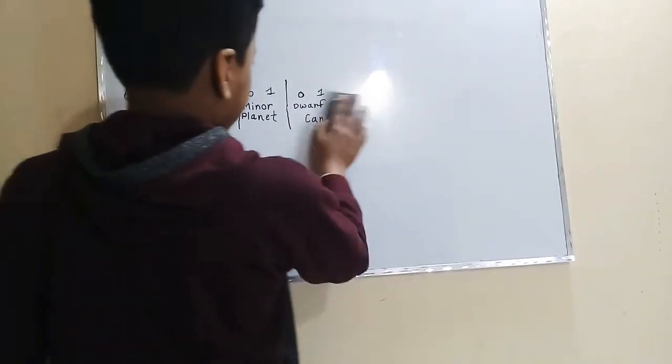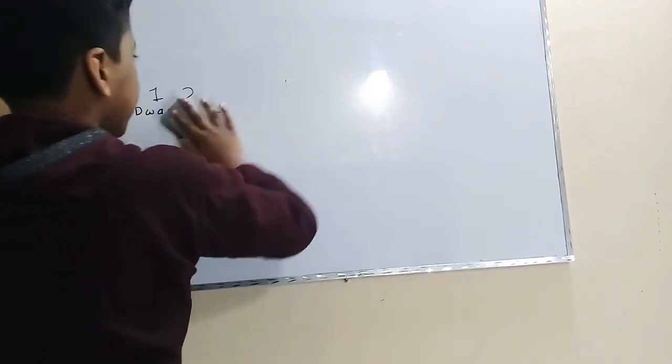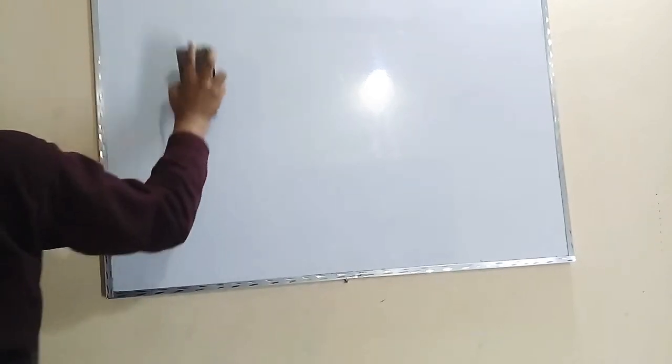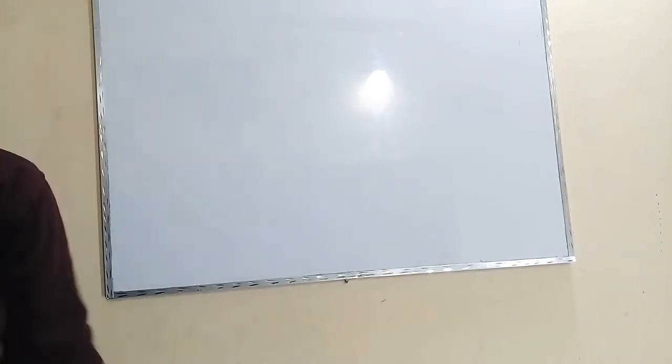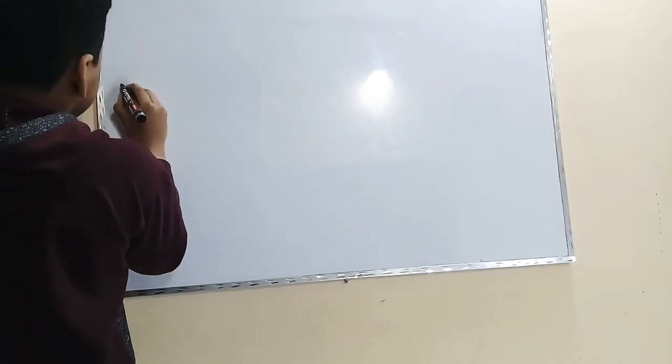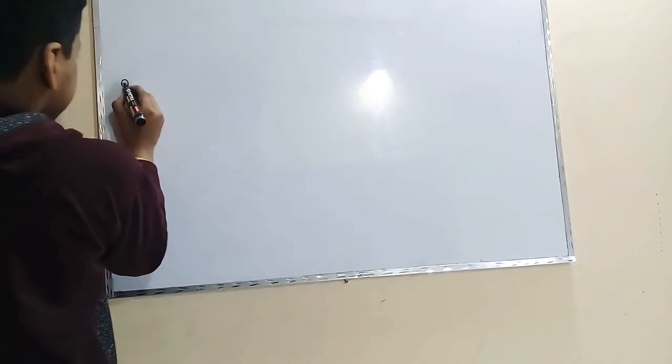Now let's start with the dwarf planets. The dwarf planets in our solar system, there are five dwarf planets. First, the smallest dwarf planet, Ceres.